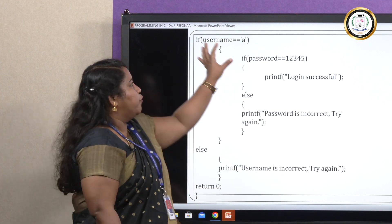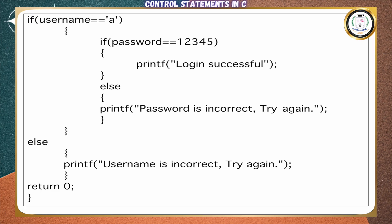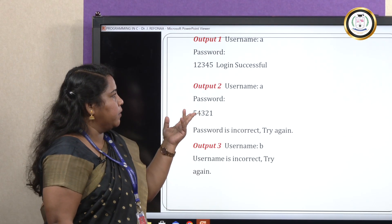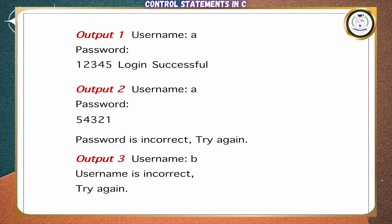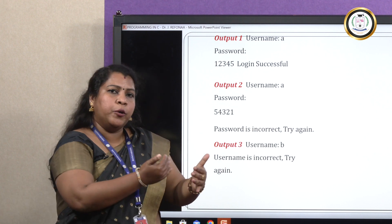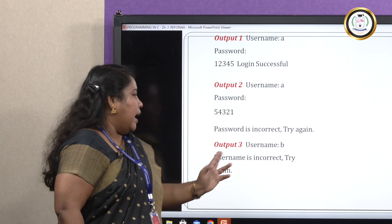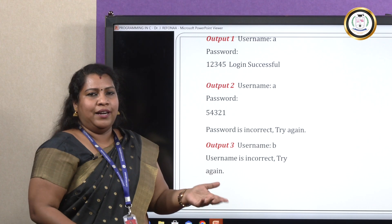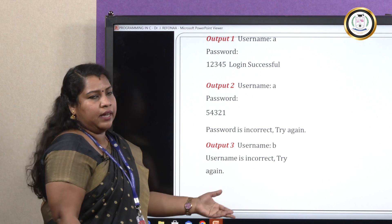First, giving username 'A': the first condition is satisfied and it enters the next if condition. My password input is 12345 — it is true, so the true statement executes as 'login successful'. Next, giving username 'A' again: condition is satisfied and it enters the next if statement. Password given is 54321 — it does not match the true statement, so it prints the else statement: 'password is incorrect, try again'. For the third output, giving username 'B': the very first condition fails, so it executes the last else statement and prints 'username is incorrect, try again'.